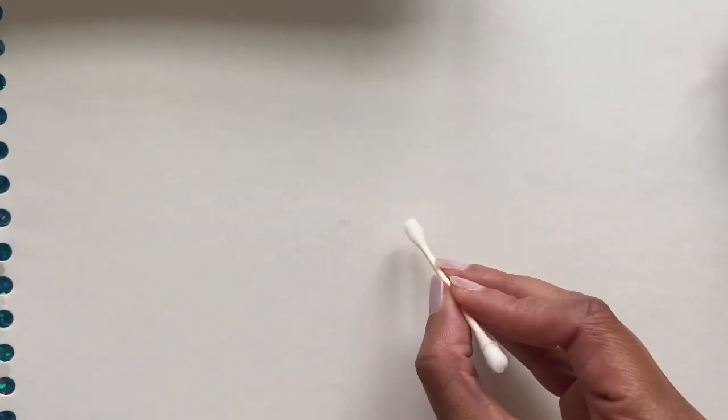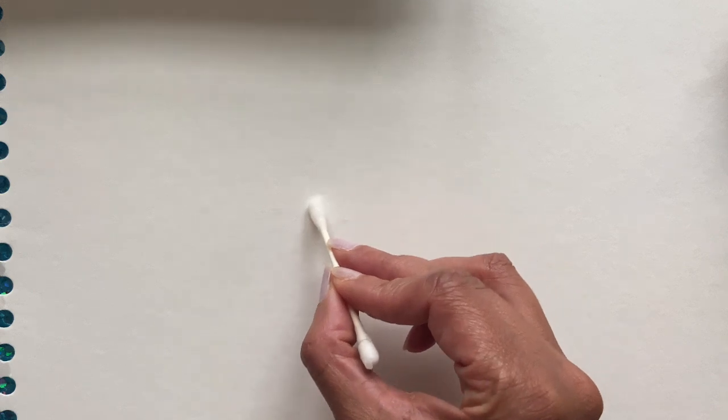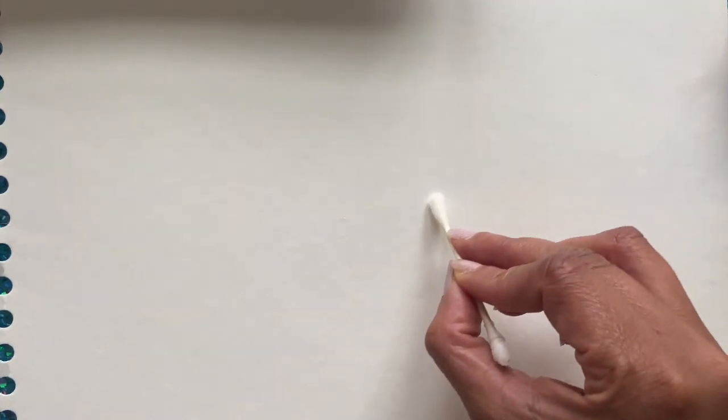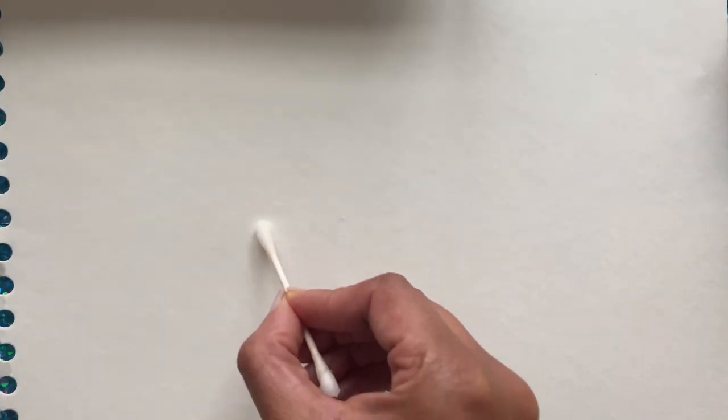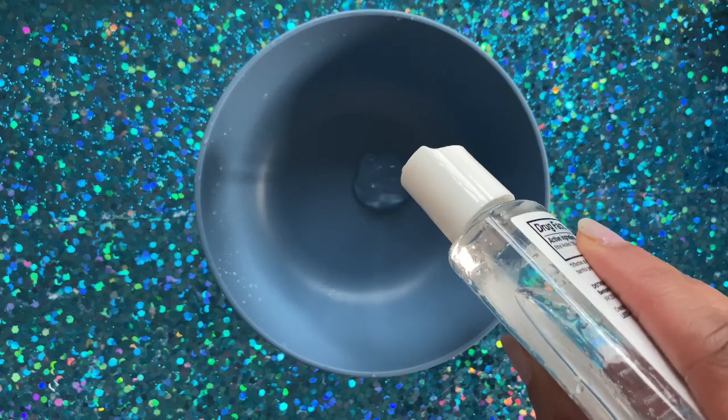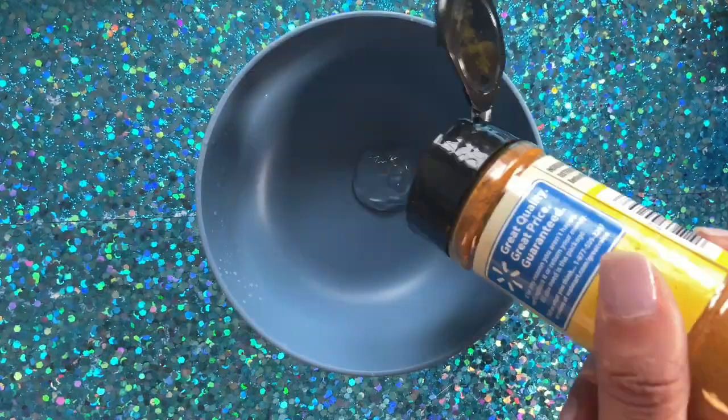Now using a q-tip or a paint brush, we can draw a picture using the baking soda solution on a piece of paper.